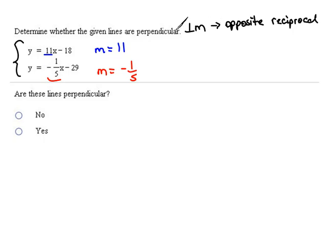Now in order for these to be perpendicular, which is what they're asking, then the slopes have to be the opposite sign, which they are, but then they have to be reciprocals of each other, and that's not true. So these lines are not perpendicular.